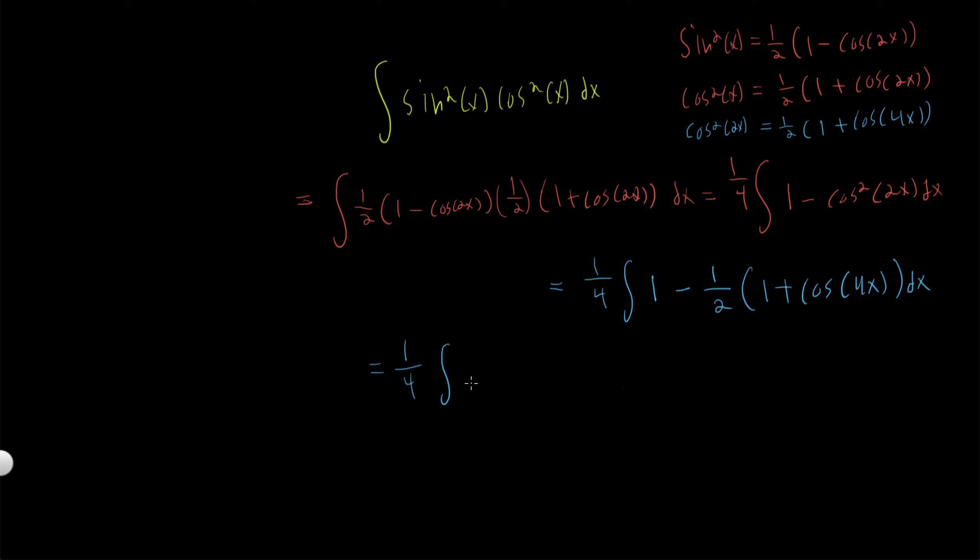Let's simplify this a little bit. This is one-fourth the integral of one minus one-half minus cosine of 4x over two dx. It seems to me now that we can actually just take the integral.